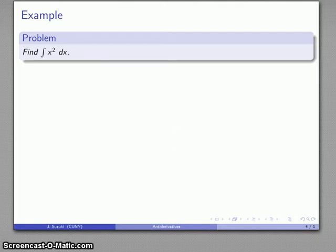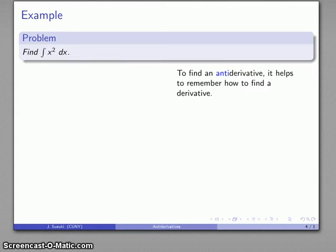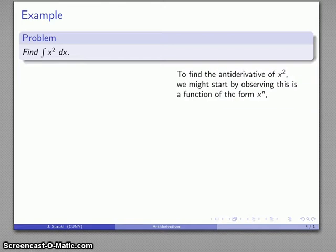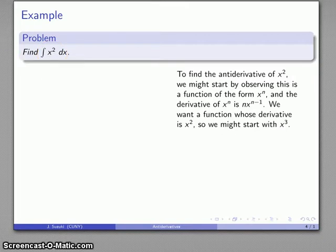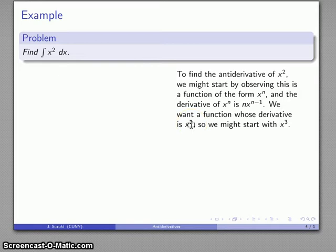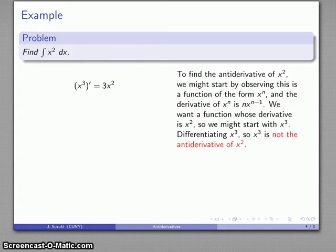Let's do an actual problem: find the antiderivative of x², differentiating with respect to x. It helps to remember how to find a derivative. This is a function of the form xⁿ, and I know the derivative of xⁿ is nxⁿ⁻¹ — the exponent drops by 1. So since I want a function whose derivative is x², I want to start with x³. The derivative of x³ is 3x² — almost what we want, but not quite. So x³ is not the antiderivative of x².